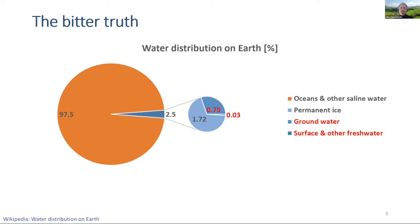And finally, there's a very small fraction of freshwater stored as groundwater or available in other surface water bodies. So the question is: if we are talking about such an insignificant quantity in terms of total water availability on the globe, why should we bother?